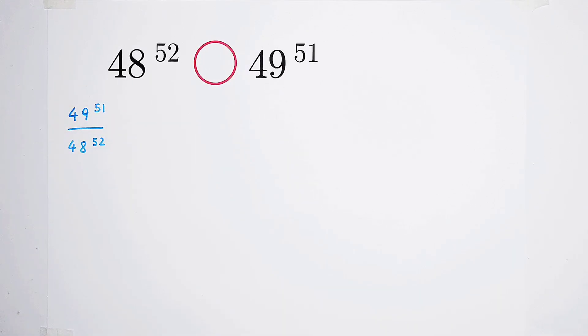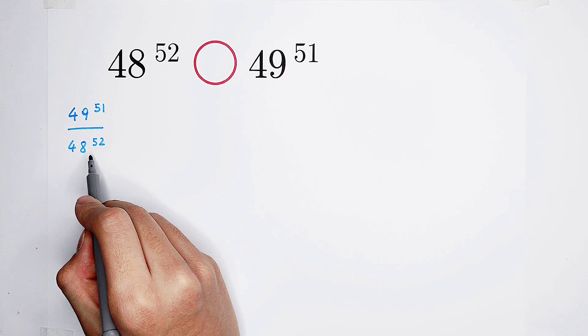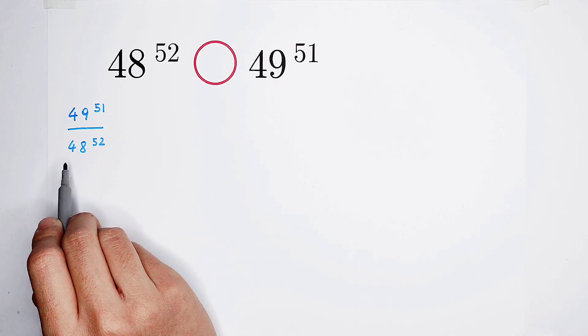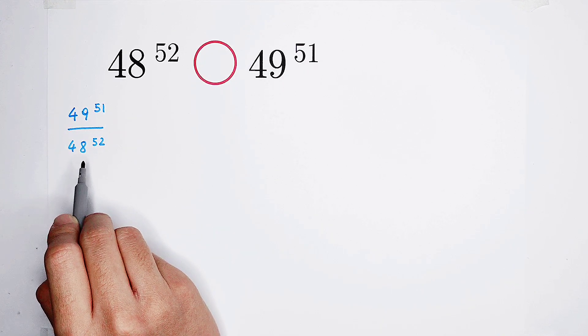Different exponents, different bases. However, this 52 can actually be written as 51 plus 1. So the denominator, 48 to the power of 52, can be written as 48 to the power of 51, then times 48.